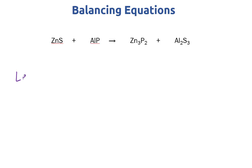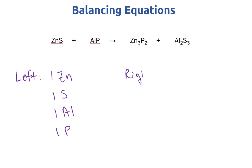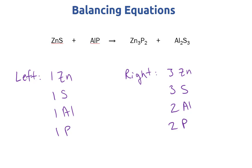On the left we have one zinc, one sulfur, one aluminum, and one phosphorus. On the right side we have three zinc, two phosphorus, two aluminum, and three sulfur. So let's check what's different — all of them are unbalanced, so we have an inconsistent number of zinc, sulfur, aluminum, and phosphorus.